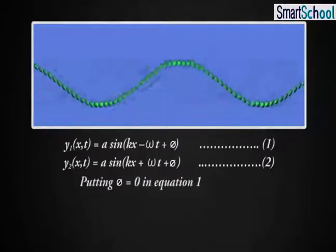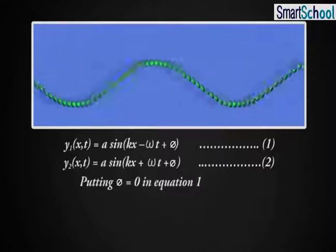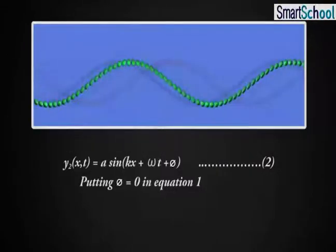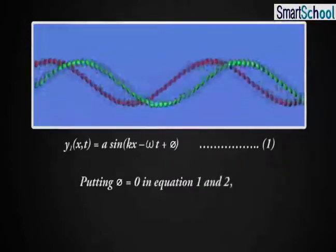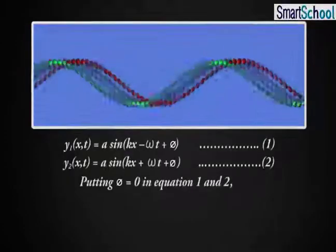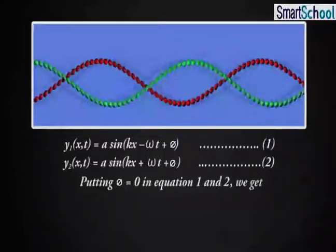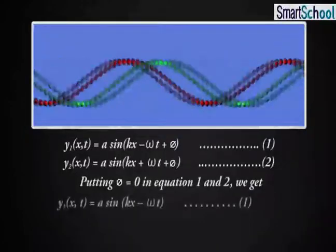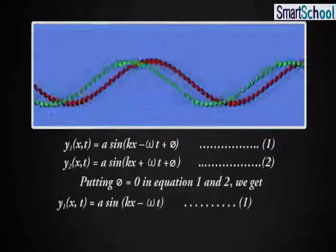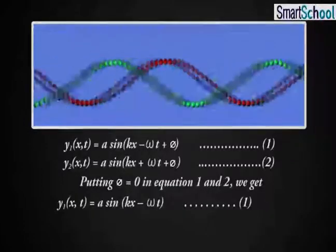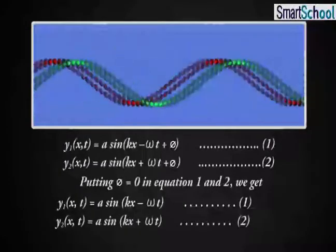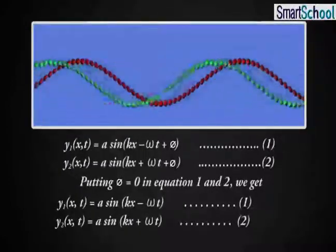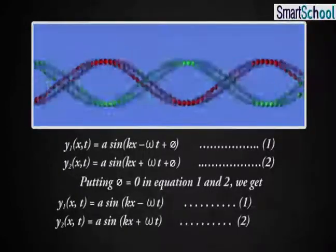Putting φ is equal to 0 in equation 1, y₁(x,t) is equal to a sin(kx - ωt). y₂(x,t) is equal to a sin(kx + ωt).